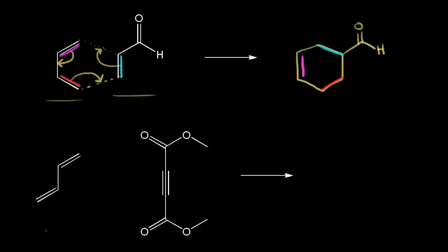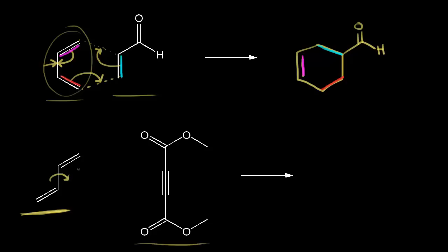For the next problem, on the left is our diene and on the right is our dienophile. Notice the diene has an interesting conformation. Up in the previous example we had our diene in the S-cis conformation, where S refers to the single or sigma bond. Here we have the S-trans conformation — the double bonds are trans about this single bond. So we have to rotate about this single bond to go from S-trans to S-cis, which is required for a Diels-Alder reaction to occur.